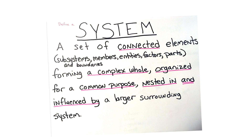So to define a system: a system is a set of connected elements which can consist of subsystems, members, entities, factors, parts, and boundaries forming a complex whole, organized for a common purpose, nested in and influenced by a larger surrounding system. Let's go to slide number two and I'll explain what this means.